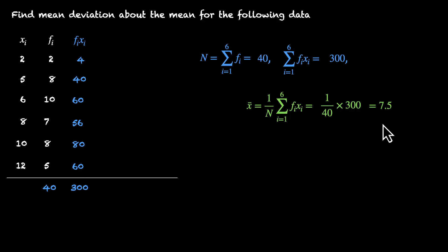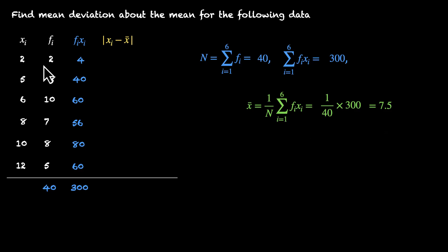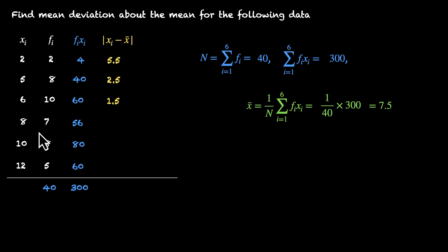Now we have the mean of 7.5, and we need to find the mean deviation about the mean. Let's create another column for |Xi − X̄|, the absolute difference of each value from the mean. The distance between 2 and 7.5 is 5.5; between 5 and 7.5 is 2.5; |6 − 7.5| = 1.5; |8 − 7.5| = 0.5; |10 − 7.5| = 2.5; |12 − 7.5| = 4.5.